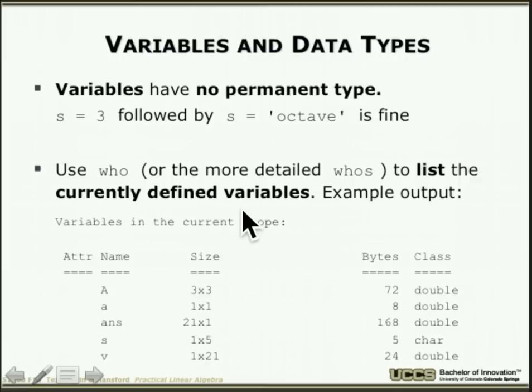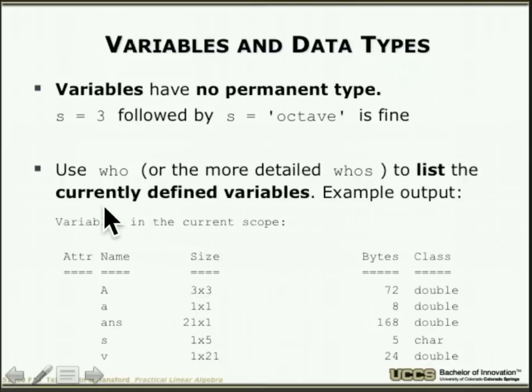Variables in MATLAB and Octave have no permanent type. You can assign an integer to 's', then on the next line assign a string to 's' — perfectly fine. There's no strong or permanent typing, so be careful with typos. To see what variables you have, use 'who' or 'whos', which list currently defined variables with details about each.